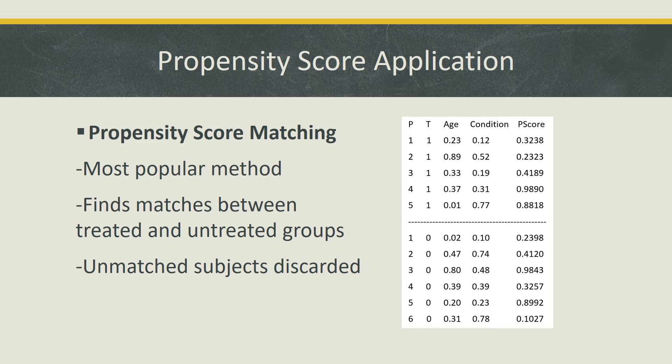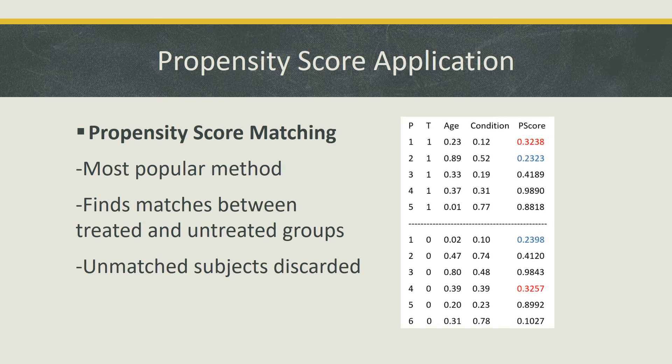In the figure to the right you see various columns with values underneath. The p stands for patient and the t is for treatment. Every patient is assigned a 1 if they are in the treatment group or a 0 if they are in the control. Measurable variables are provided under age and condition. The propensity score, represented by the p-score column, was calculated for each row. Now that we have an idea of what was done, we can go ahead and start matching propensity scores between the treatment and control groups. As you can see, we can match the 0.3238 and 0.3257 since they are the nearest neighbors. Then we move on and match the next two, and continue the process until our matching is complete.